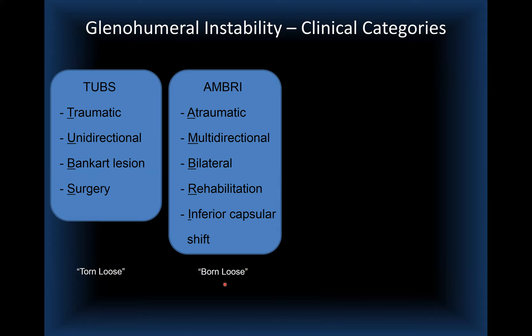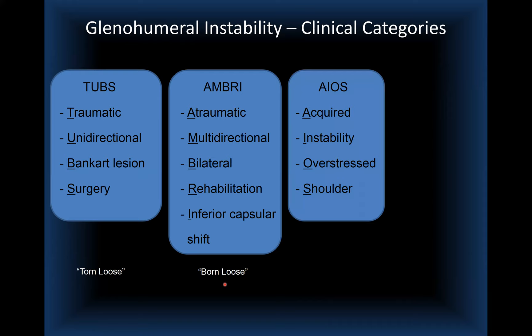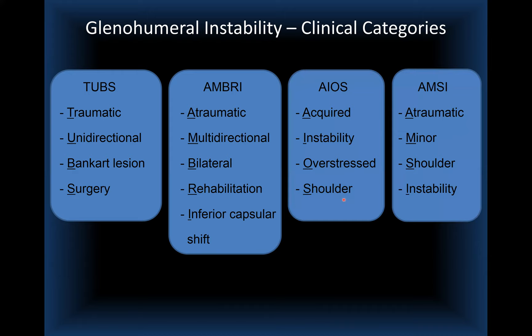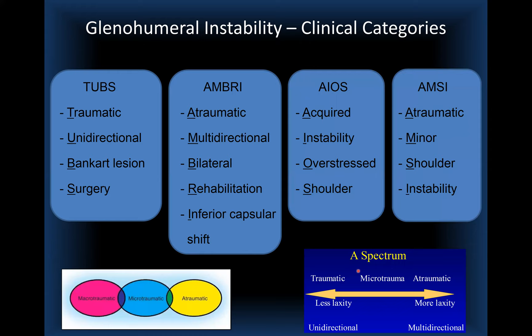The two minor instability groups are AIOS (acquired instability of the overhead stress shoulder), typically seen in athletes, and ANSI (atraumatic minor shoulder instability), similar to AMBRI but to a lesser extent. The spectrum goes from traumatic with less laxity and unidirectional instability, to atraumatic with more laxity and multidirectional instability.